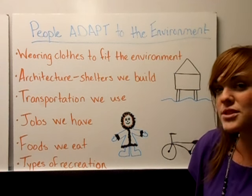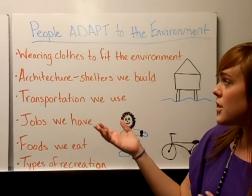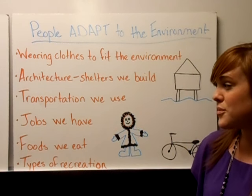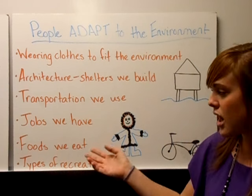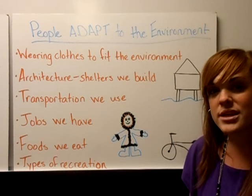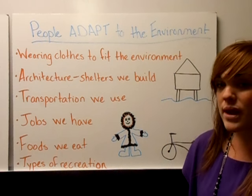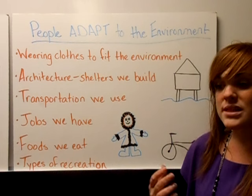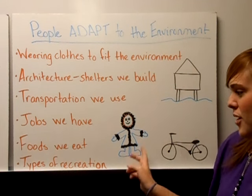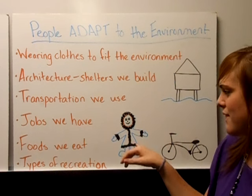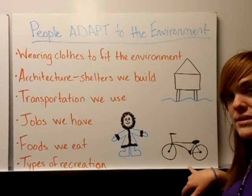People adapt to the environment — that means they change something about themselves to fit the environment. You wear clothes to fit the weather; the shelters you build depend on what you're building them to withstand; the transportation you use, the jobs you have, the foods you eat, and the types of recreation all depend on your environment. We have a house built on stilts in the water, an Eskimo dressed for the weather with boots, mittens, and a heavy fur coat, and a bicycle for a place with good enough weather to use one.